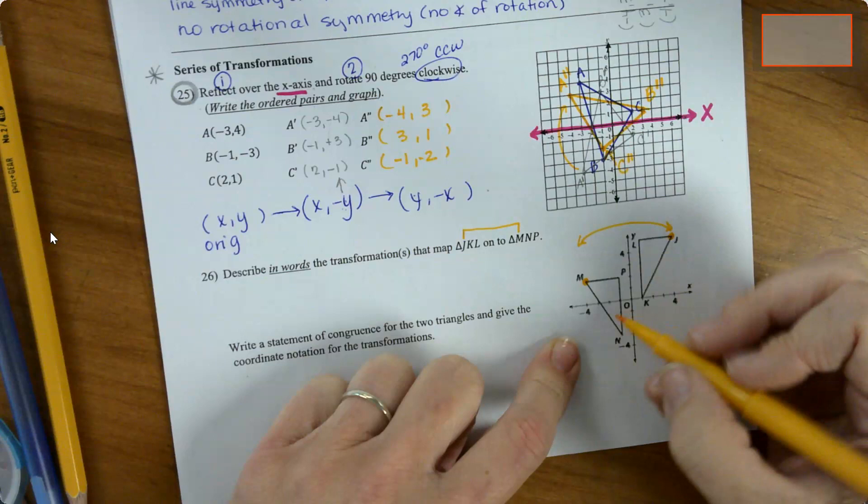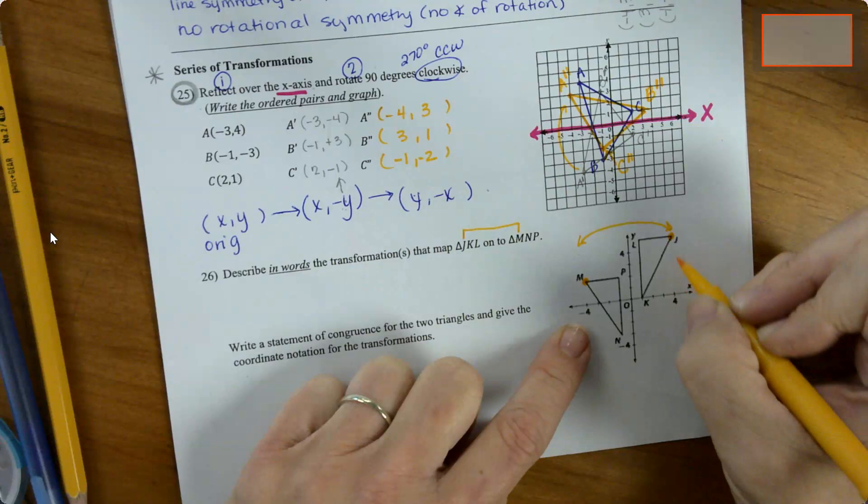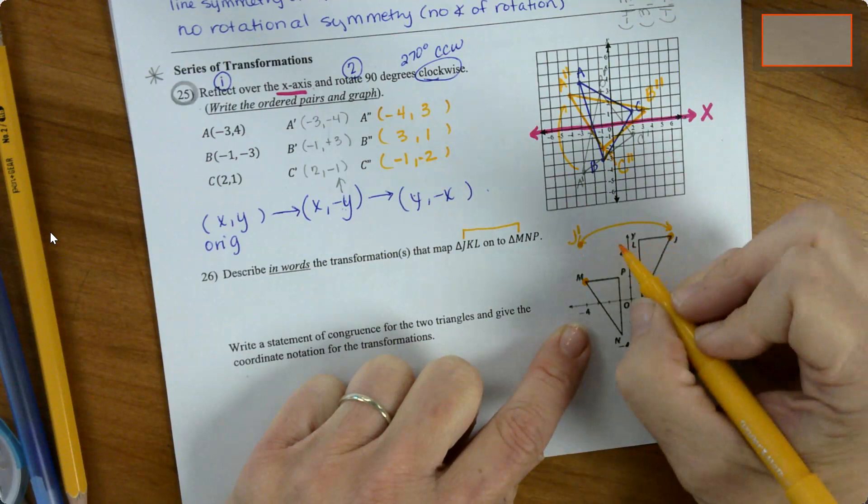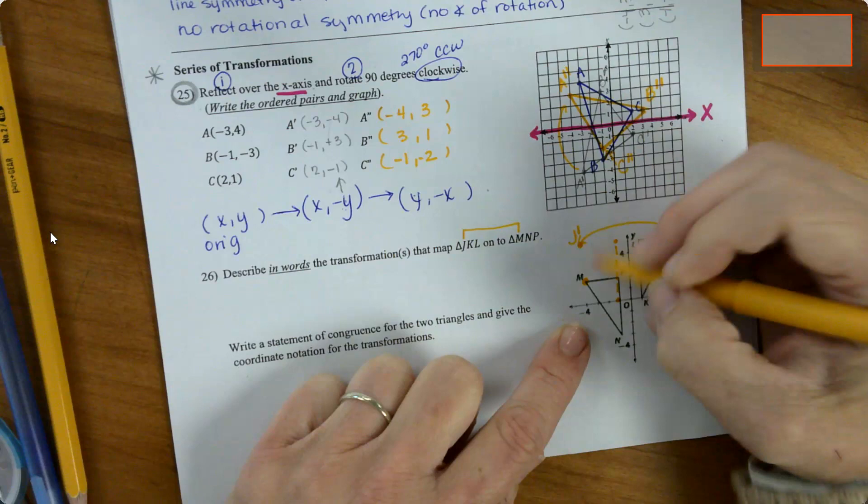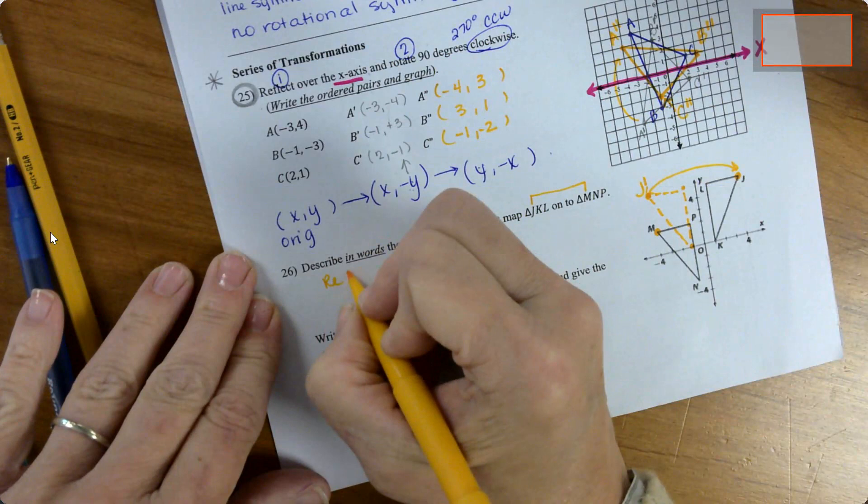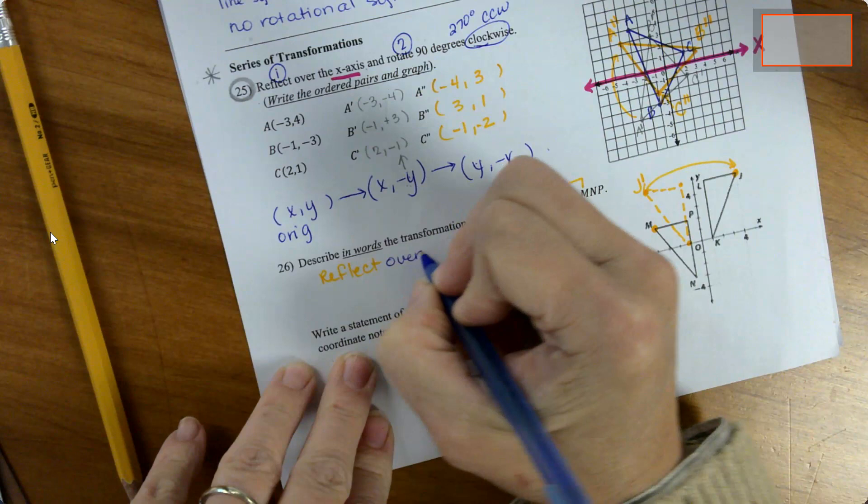I'm going to kind of just sketch that out. So we got to reflect over the y-axis. And notice I sketched it first. And once I did that, then I have to go down how many. So we're up here, so 1, 2, 3 down.